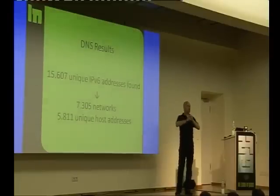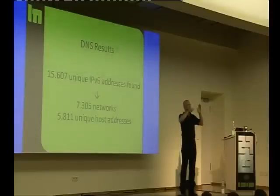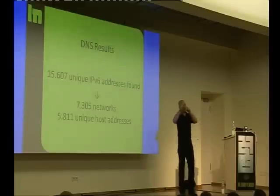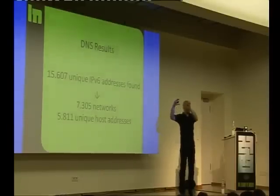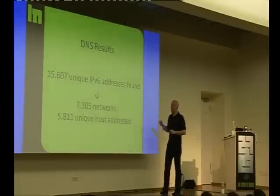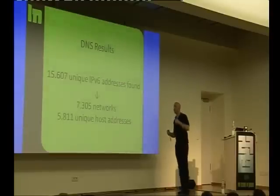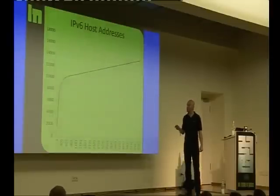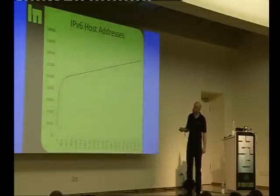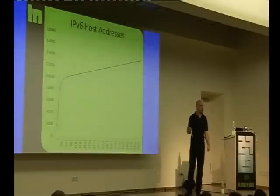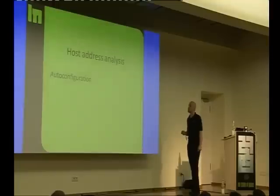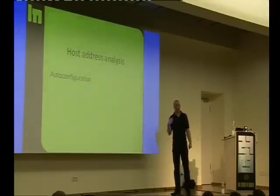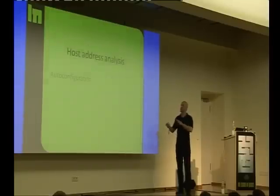Unique host addresses — the host part, like in IPv4 where 192.1.1 is the network part and .1 or .100 is the host part. Here there were 5,800 unique host addresses. I made a statistic of how often each came up. There's a spike for the most common ones and then it flattens. If I scan all the networks for just the top 300-400 most common host addresses, I will find many more systems.